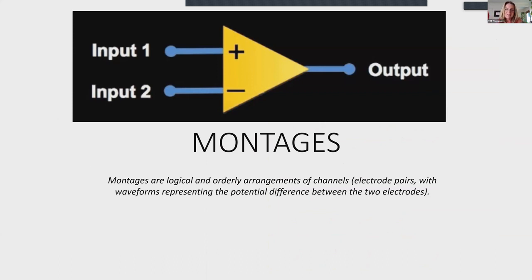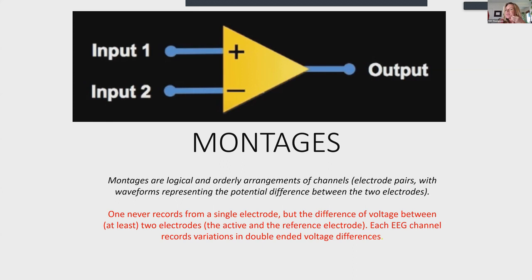Montages are logical and orderly arrangements of channels — electrode pairs with waveforms representing the potential difference between two electrodes. You never record from a single electrode; it's always the difference between at least two — the active and the reference electrode. That's called a derivation, also called a channel. Each EEG channel records a variation in double-ended voltage differences.